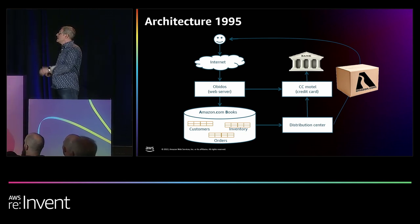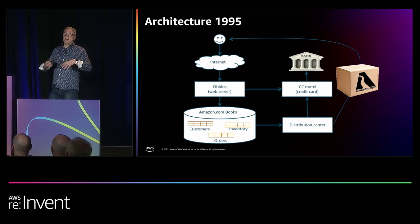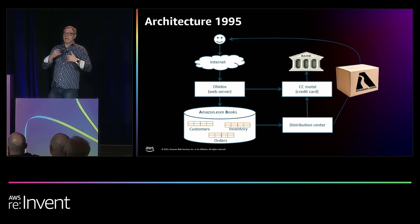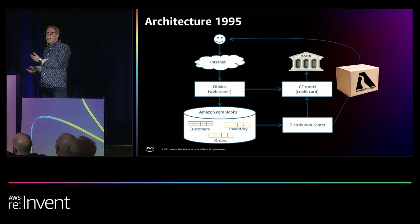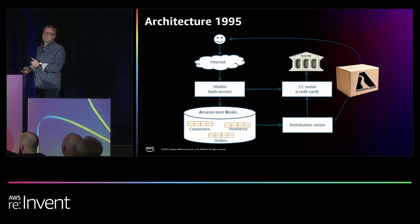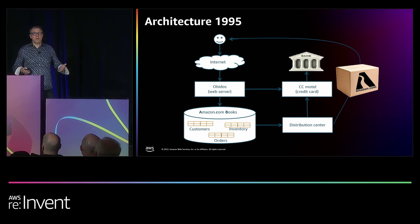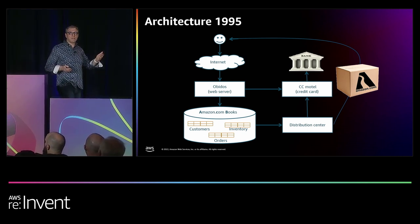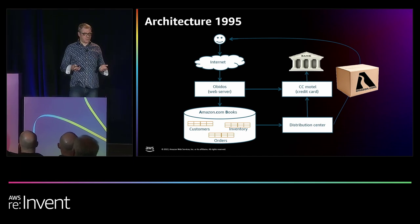You can see there's CC Motel — that's a credit card system, kept separate so credit card numbers could be secure. And there's a distribution center, later renamed fulfillment centers, from which your package would be shipped. So that's the original architecture.